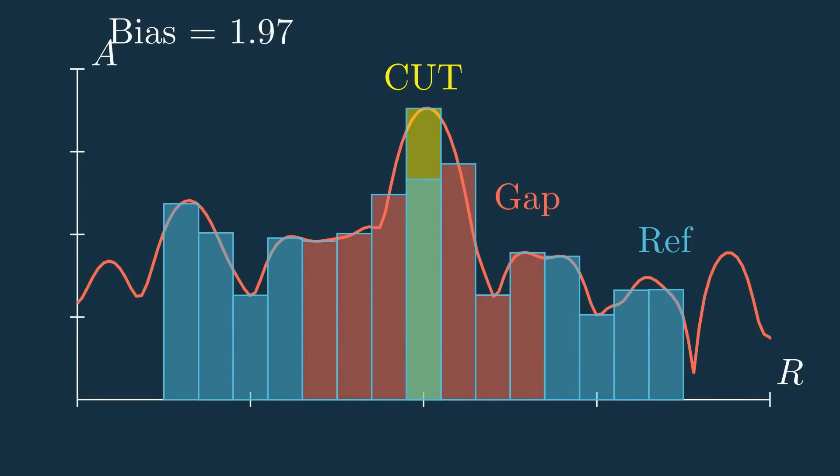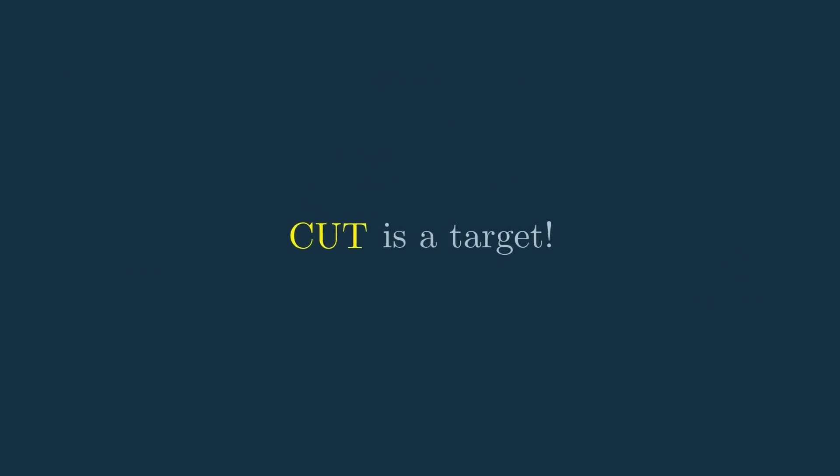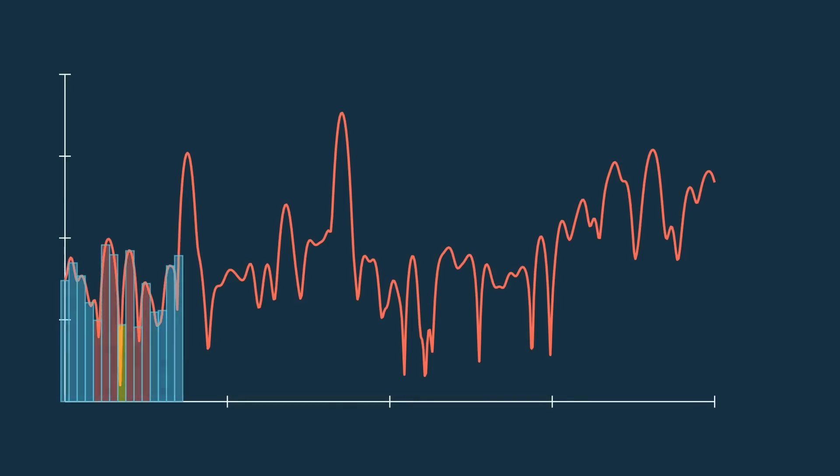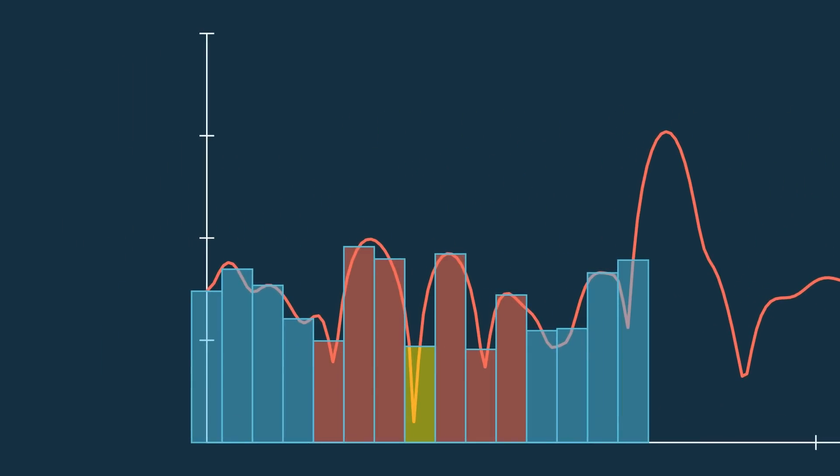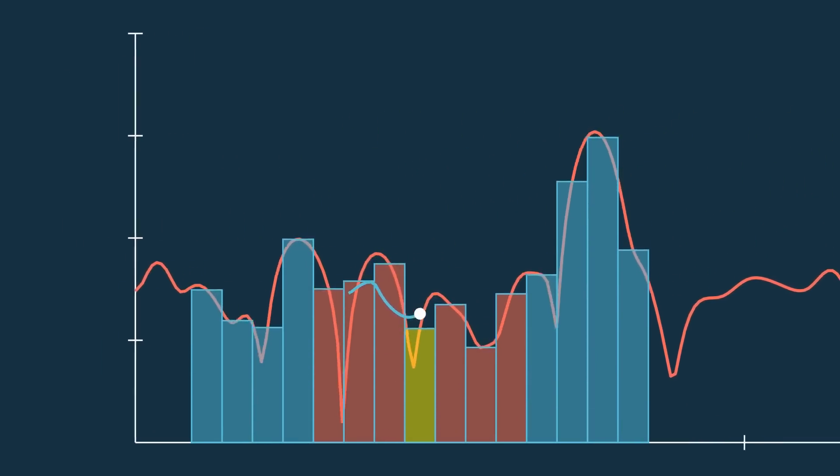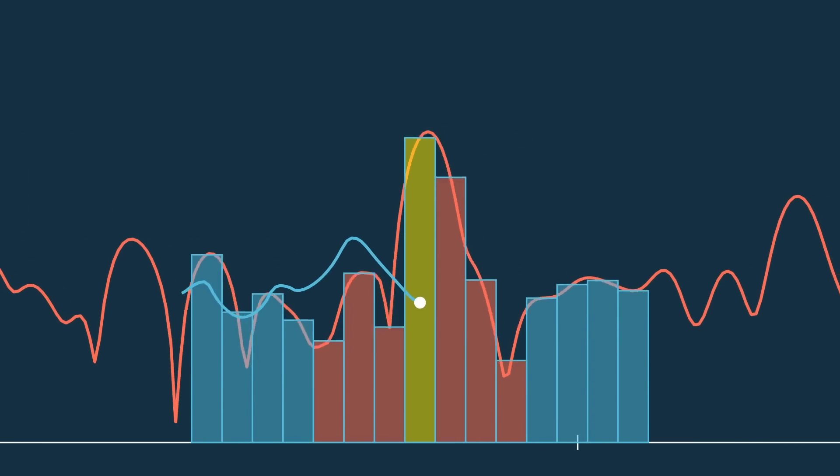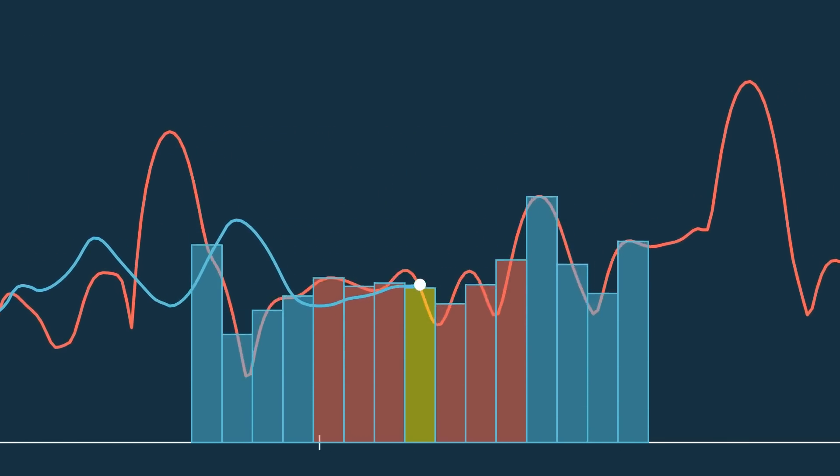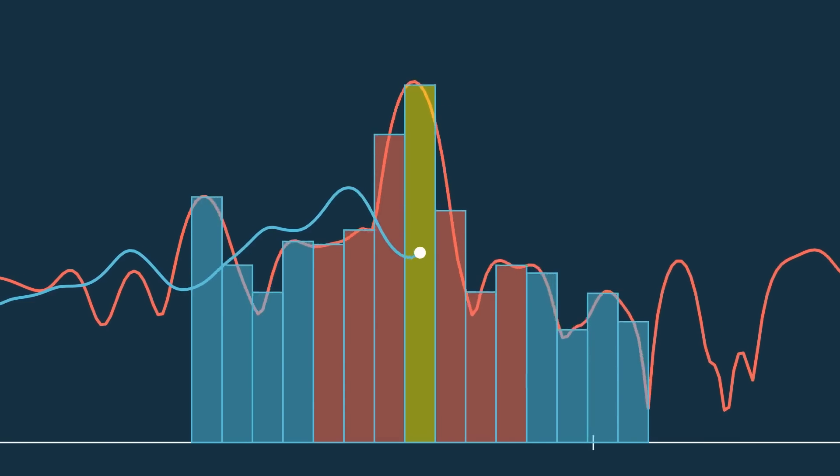As you can see, this is what determines how strict the threshold is. This thing gives us a threshold, and look, the cell under test's amplitude is above the threshold, so it must be a target. Now, this process can be swept across all the cells to get a complete dynamic threshold. Right here, we're creating this blue line by looking at each of the cells under test and computing the mean of their respective reference cells.